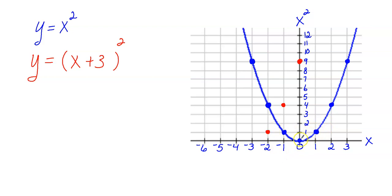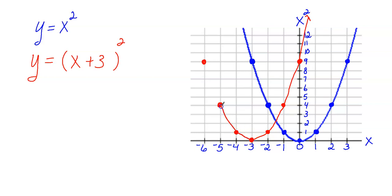I'm just moving each point left 3 units, continuing across all points on the graph. I did something wrong with one point — let me correct that and move it left 3. There we go, that looks a lot better. The graph in red is y equals the quantity x plus 3, squared. If you had to describe this transformation, you would say the parent function y equals x squared was translated left 3 units.